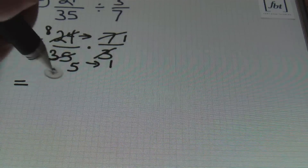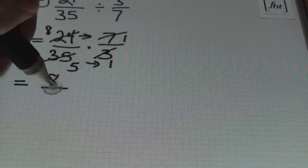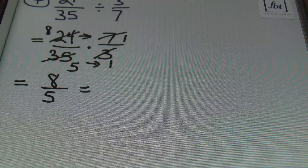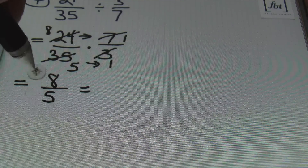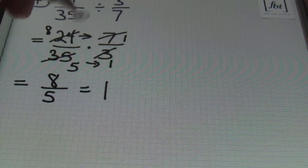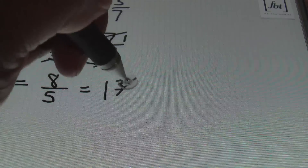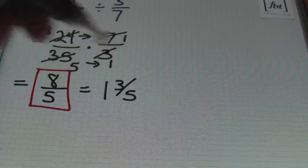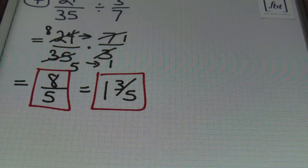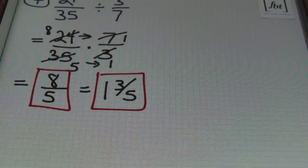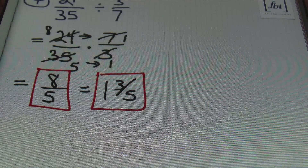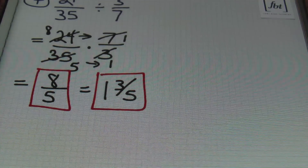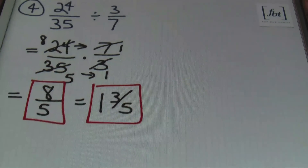So 8 times 1 is 8, and 5 times 1 is 5. This could be your answer as an improper fraction. Or if you want to write this as a mixed number, 5 goes into 8 one time leaving you with 3, so you'll end up with 1 and 3 fifths. Either answer, depending on your level of mathematics class, can be accepted. You have 8 fifths as the improper fraction and 1 and 3 fifths as the mixed number — both are correct, they're the same value. That's problem number 4.